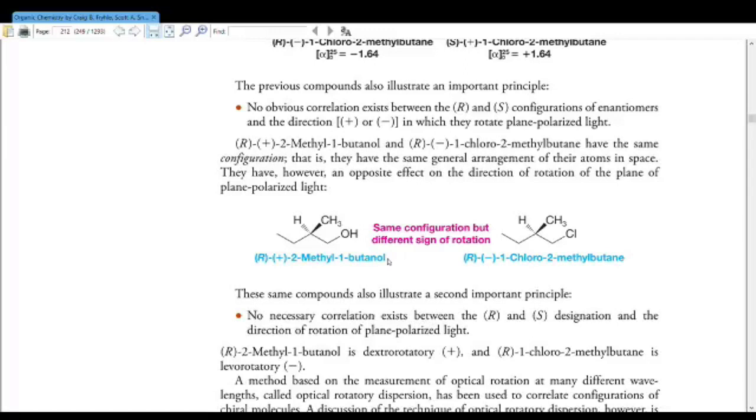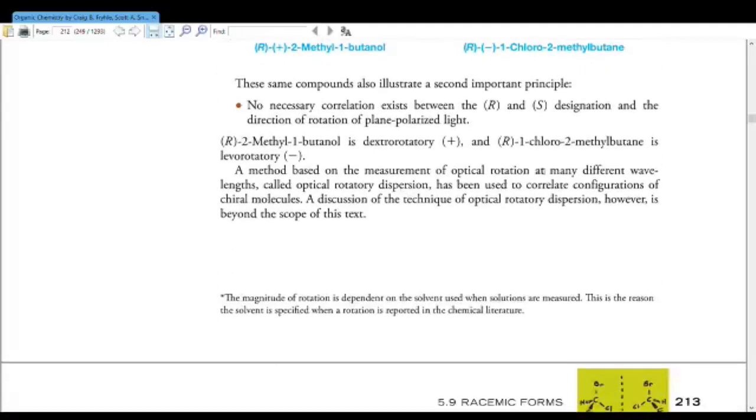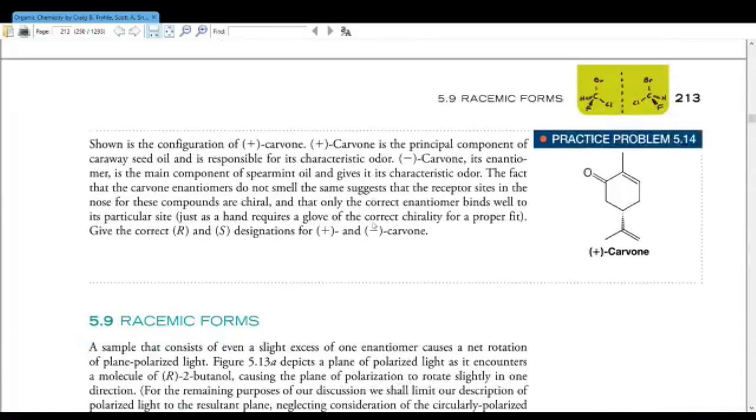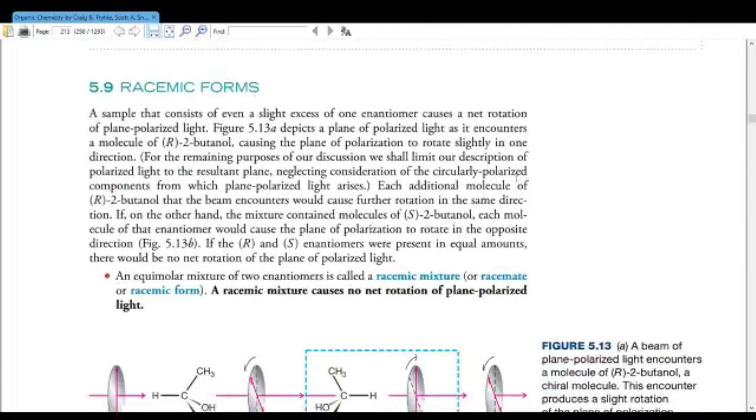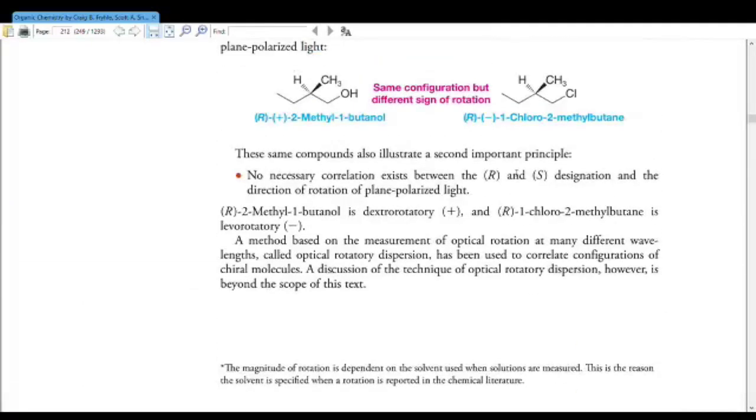It would be nice if it was always written like this. But if you know that it is the R enantiomer, you can always go check the literature and it will tell you everything else you need to know, whether it's dextro or levo and all that other good stuff. A method based on the measurements of optical rotation at many different wavelengths called optical rotary dispersion has been used to correlate configurations of chiral molecules, but a discussion of this technique is beyond the scope of this text. Plus, I don't know how to do it, so I would be a poor person to be teaching you.